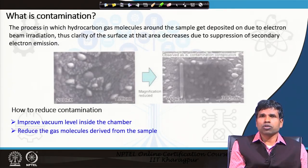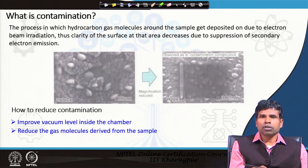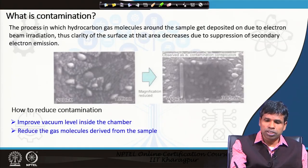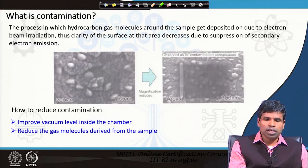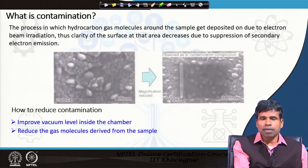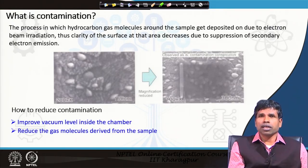This is what contamination is. The hydrocarbon gas molecules are present around the specimen in very small quantities, but still enough to produce contamination. In the presence of the electron beam, they give a coating on the specimen surface. Once carbon is coated onto the specimen, the yield of secondary electrons or backscattered electrons will reduce, and those regions will appear less bright or darker — as you see in the right-side image. The left-side image was irradiated for a little longer, and the right-side low-magnification image shows the same region appearing darker due to contamination.